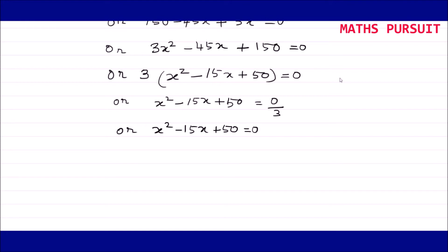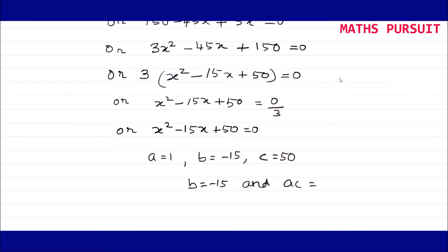Now let us solve this using the factorization method. From x squared minus 15x plus 50 equals 0, we identify a equals 1, b equals minus 15, and c equals 50. We need to find two numbers whose sum gives minus 15 and whose product gives ac, which is 50.